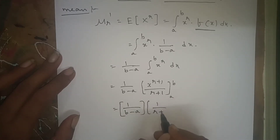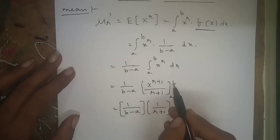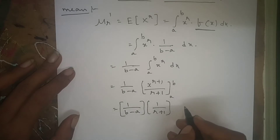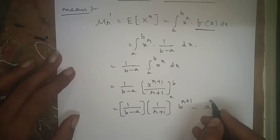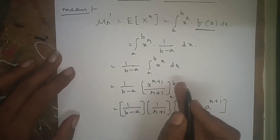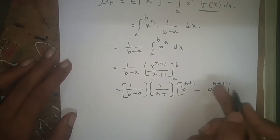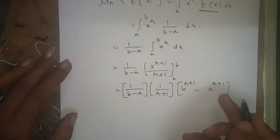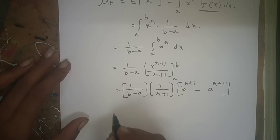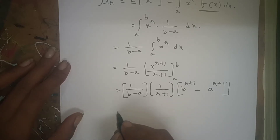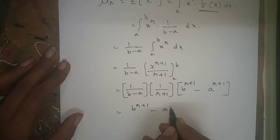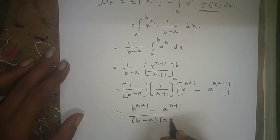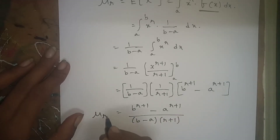Applying the limits, we get (1/(b − a)) · (1/(r+1)) · [b^(r+1) − a^(r+1)]. Therefore μ'_r = [b^(r+1) − a^(r+1)] / [(b − a)(r + 1)]. This is the general formula for raw moments of the uniform distribution.